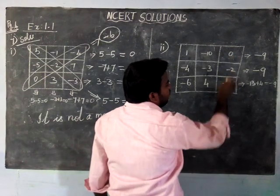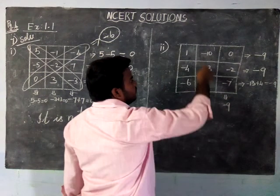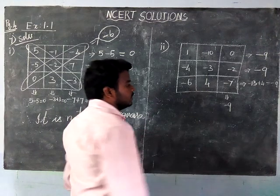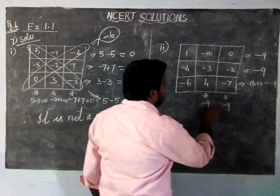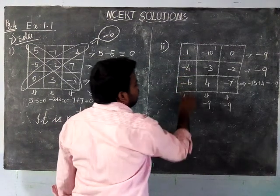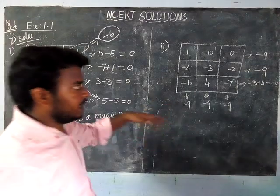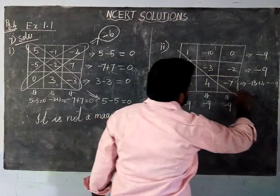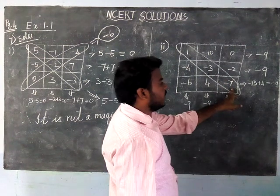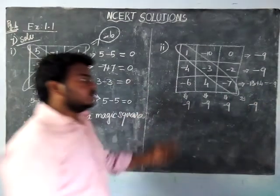Now checking the columns. Adding two negative numbers: minus seven and minus two equals minus nine. Next column: minus ten, minus three, and plus four — adding the two negatives gives minus thirteen, then plus four equals minus nine. Next column: positive one, negative, negative — adding: minus ten plus one is minus nine. So all rows and all columns give a sum of minus nine. Now checking the diagonals: plus one, minus three, minus seven — adding the two negatives gives minus ten, plus one: minus nine.